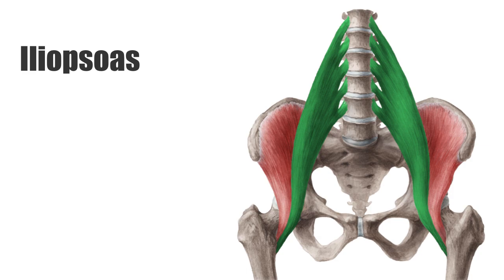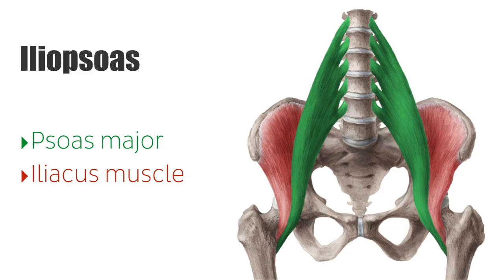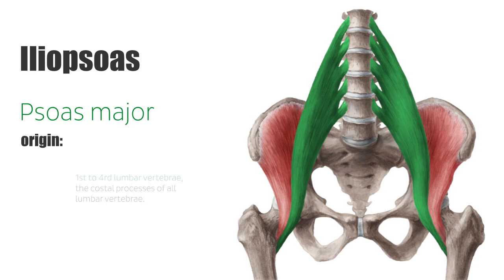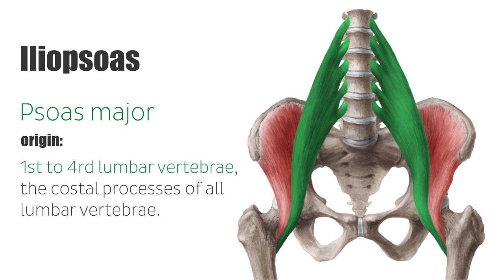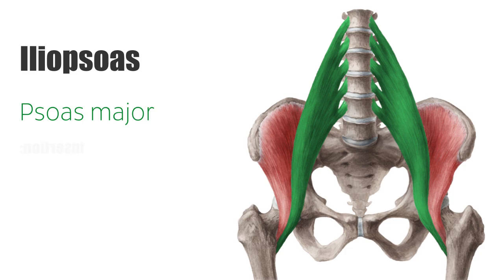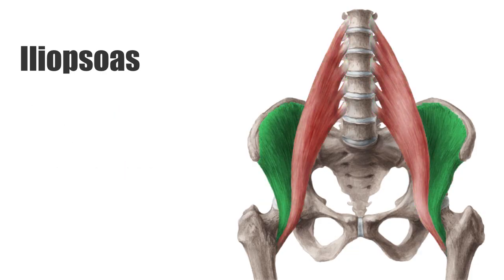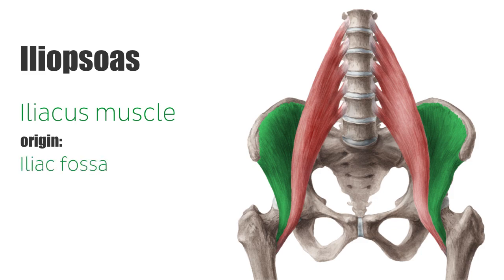The iliopsoas muscle consists of the psoas major and the iliacus muscles. The psoas major muscle originates from the first to fourth lumbar vertebrae, the costal processes of all lumbar vertebrae, and the twelfth thoracic vertebrae, and inserts at the lesser trochanter of the femur. The iliacus muscle originates from the iliac fossa and inserts with the psoas major at the lesser trochanter.